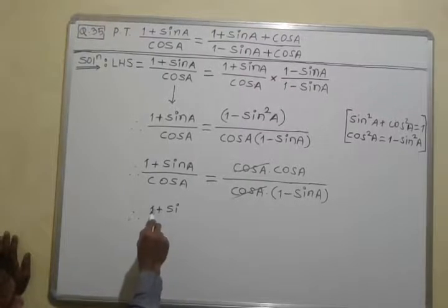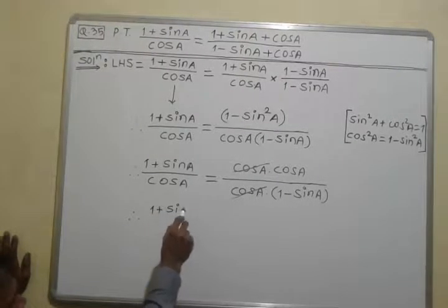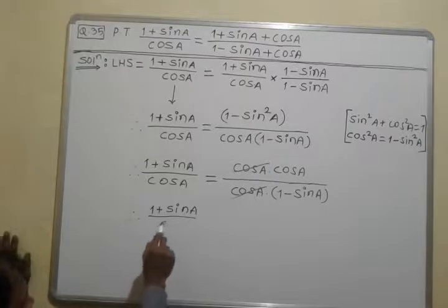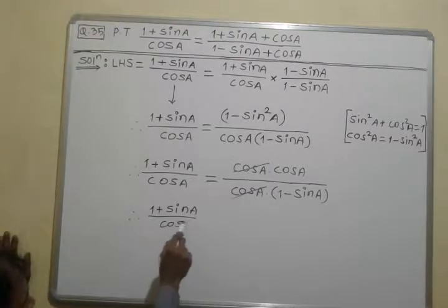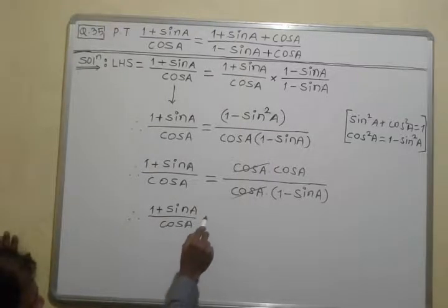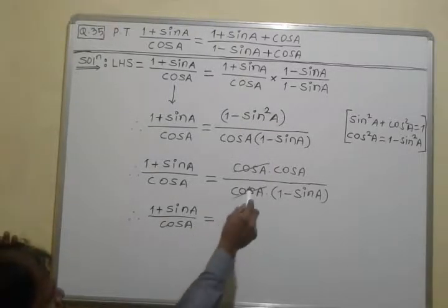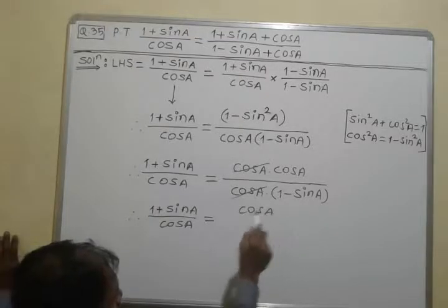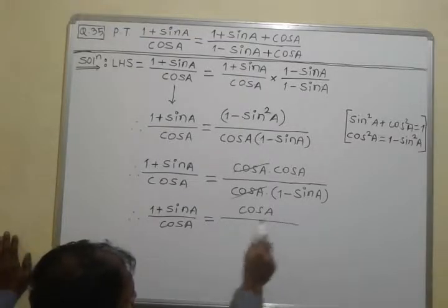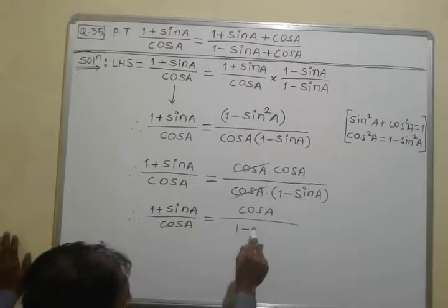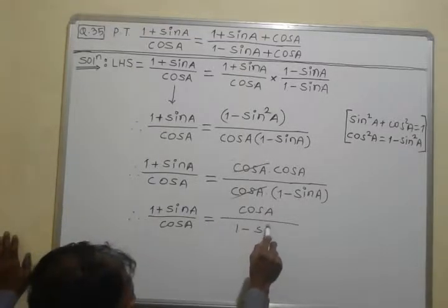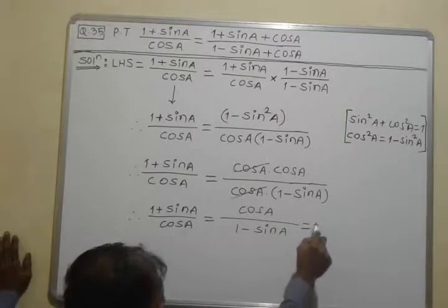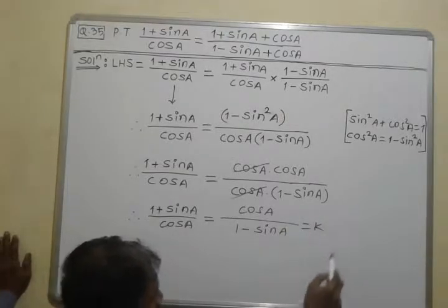So we have (1 + sinA) / cosA = cosA / (1 − sinA). I will set each of these equal to k. By the theorem on equal ratios,